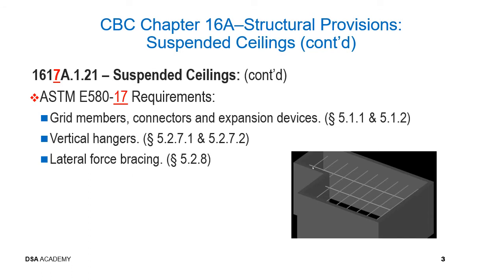ASTM E580-17 specifies requirements for suspended ceilings such as: for grid members, connectors, and expansion devices — Section 5.1.1 and Section 5.1.2; for vertical hangers — Section 5.2.7.1 and Section 5.2.7.2; for lateral force bracing — Section 5.2.8.